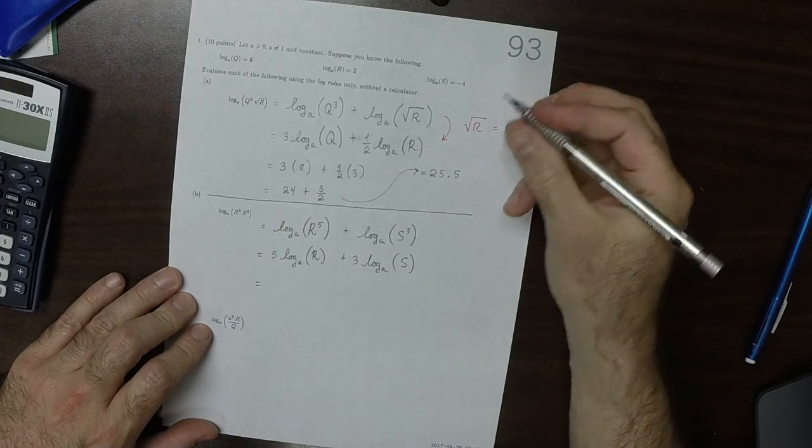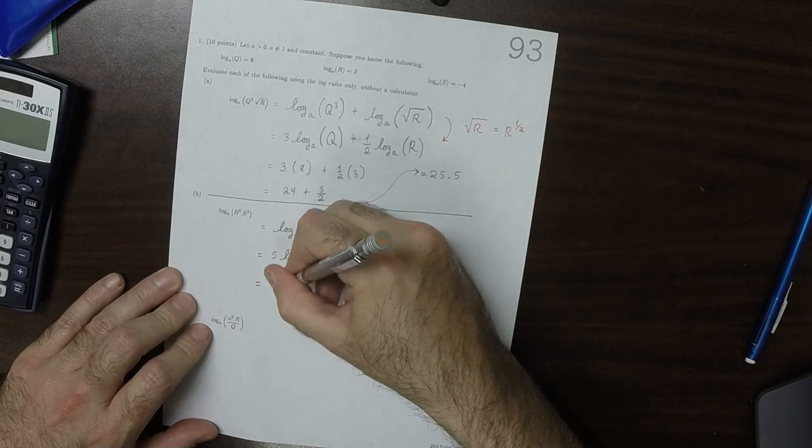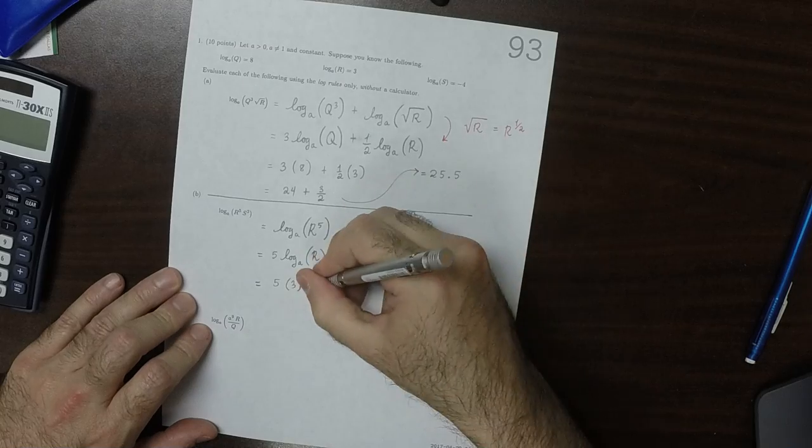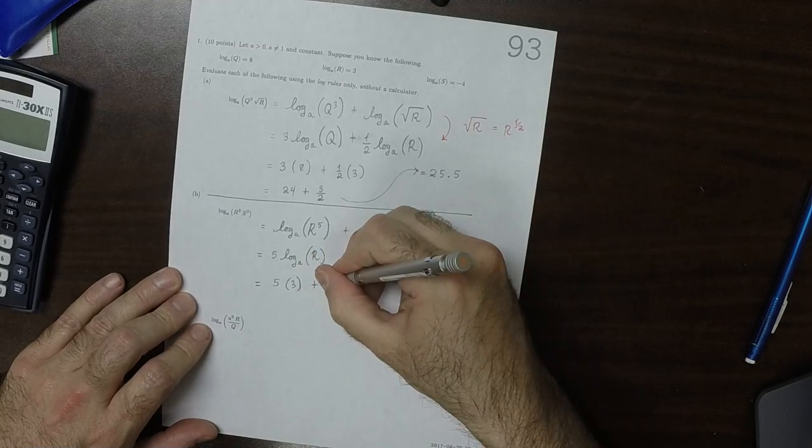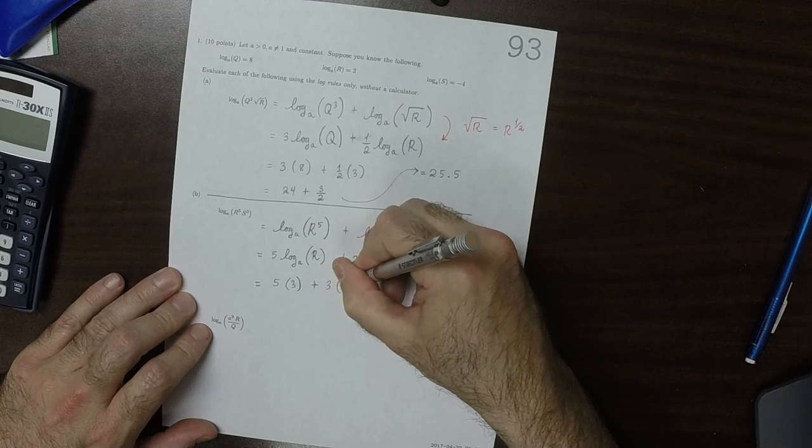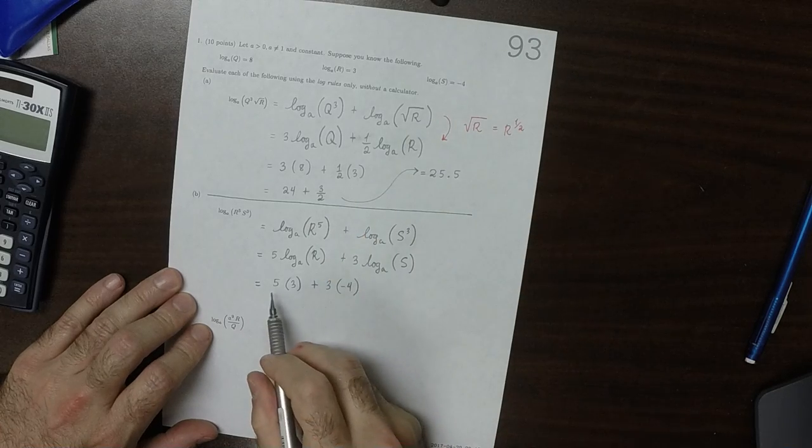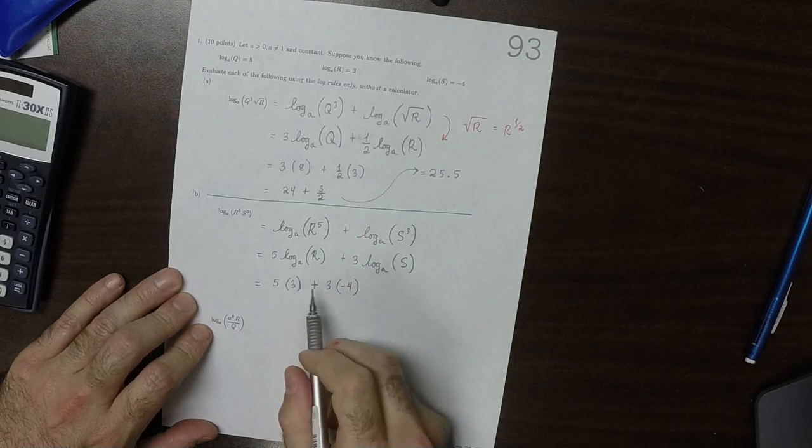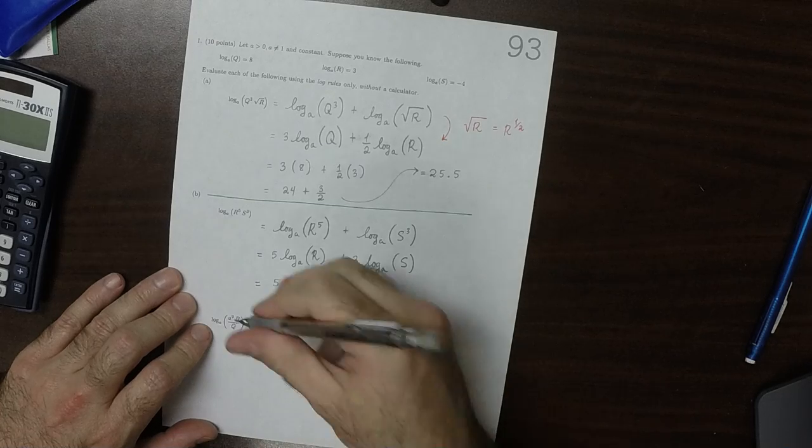So that is 5 multiplied by 3 plus 3 multiplied by negative 4. So that's 15 minus 12, so the answer is 3.